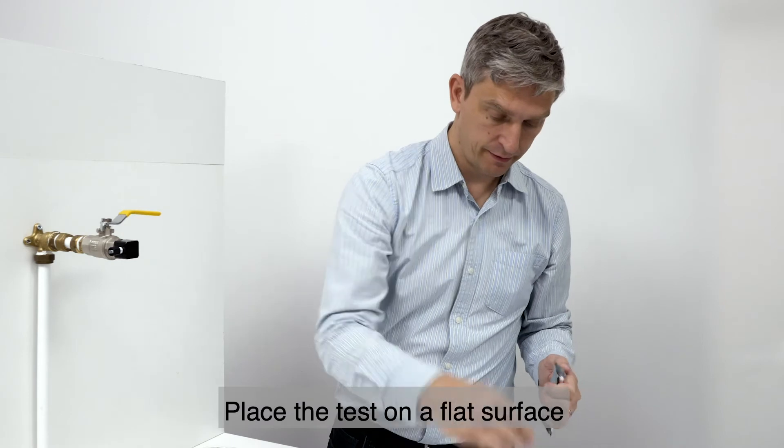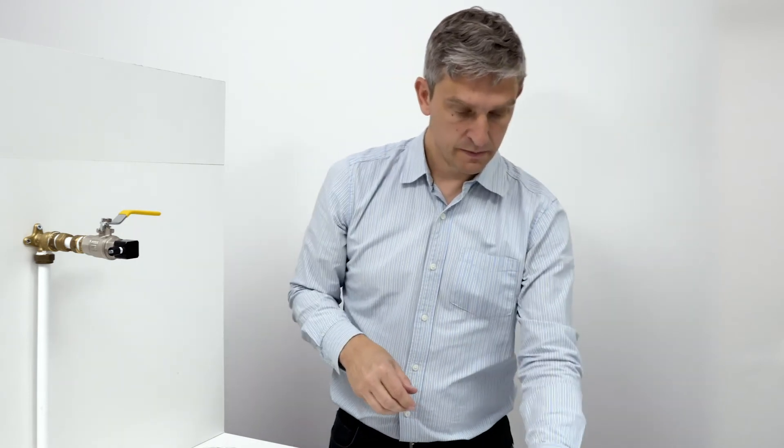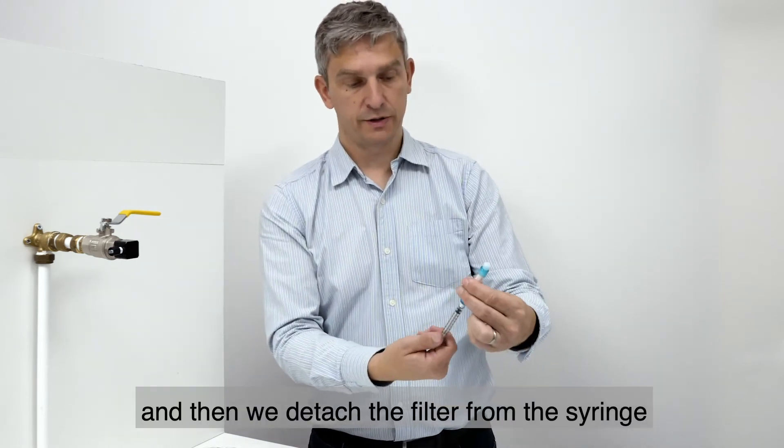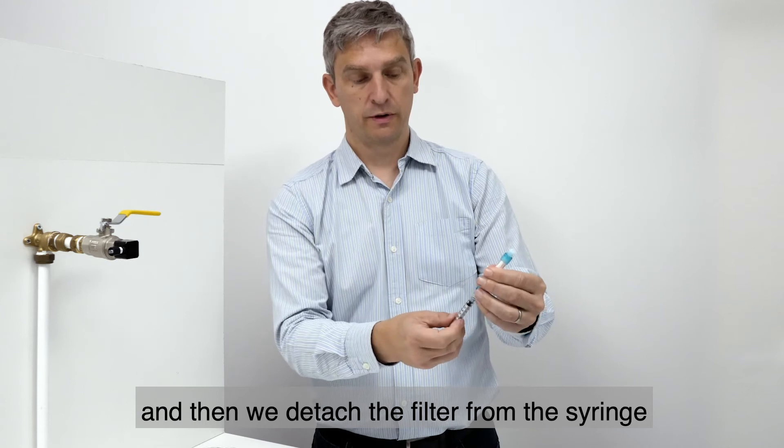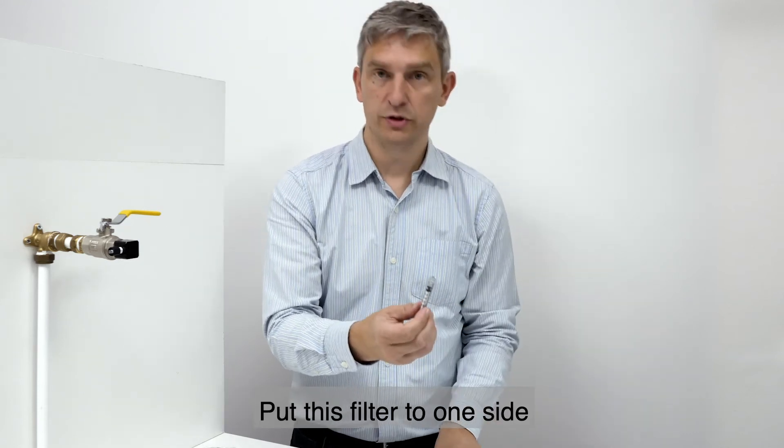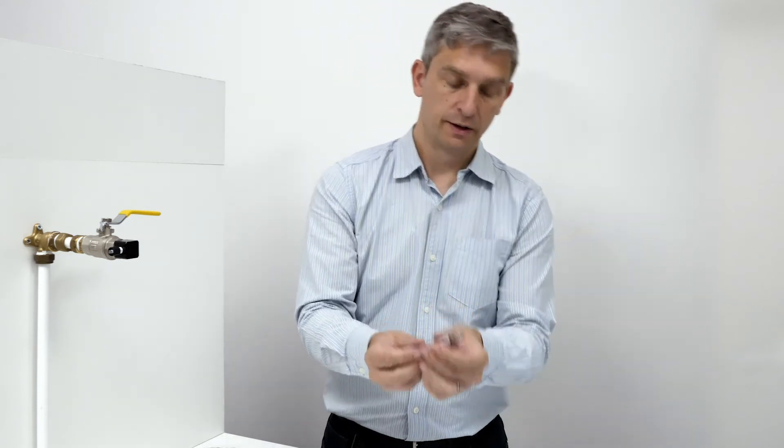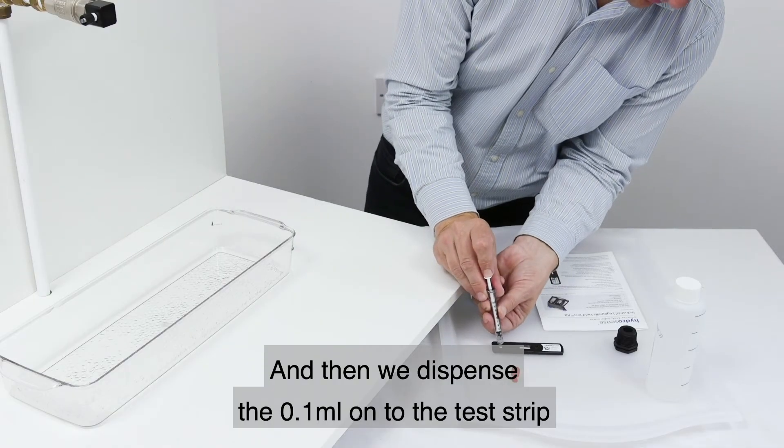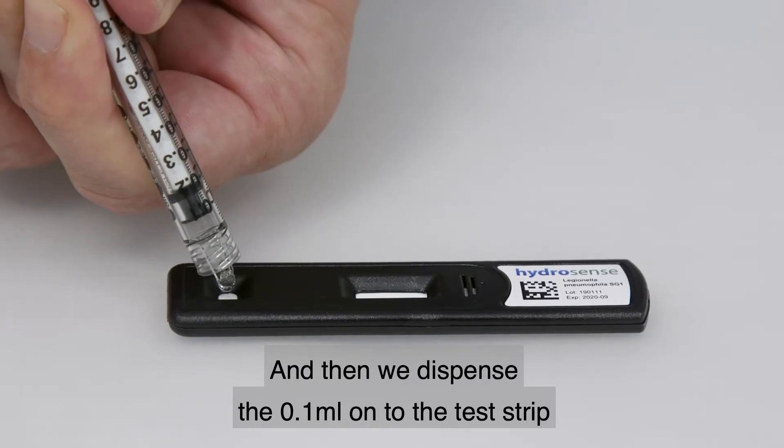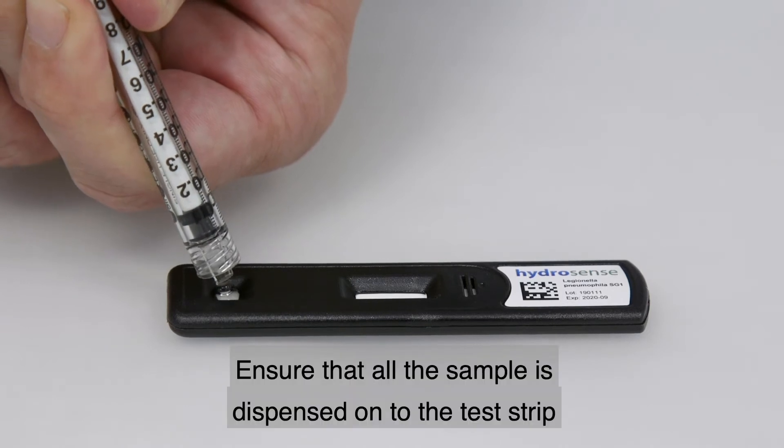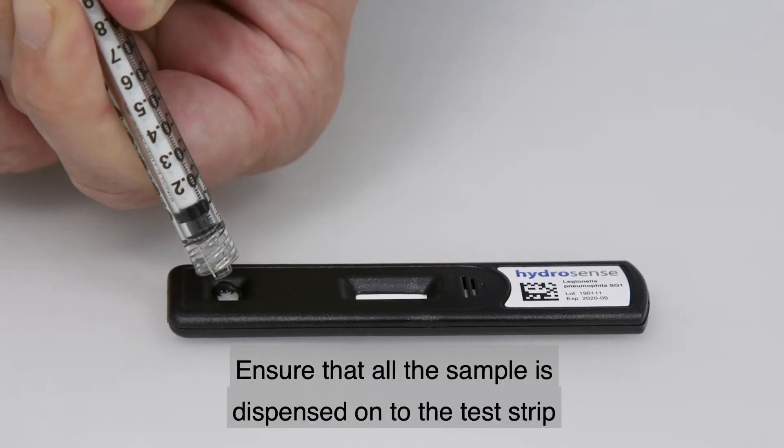Place the test on a flat surface, and then we detach the filter from the syringe. Put the filter to one side, and then we dispense the 0.1 milliliters onto the test strip. Ensure that all the sample is dispensed onto the test strip.